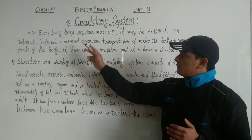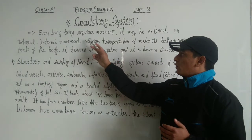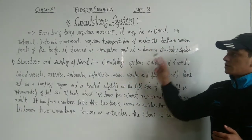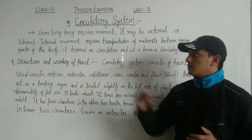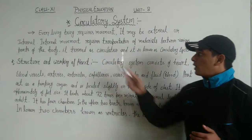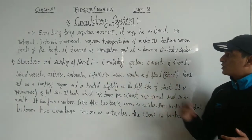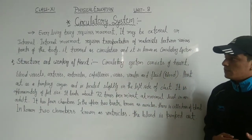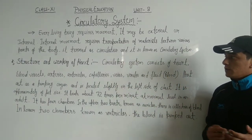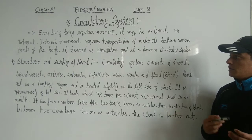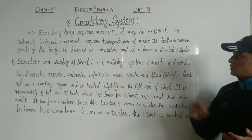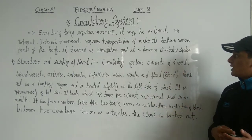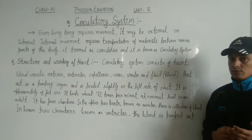Every living being requires movement. It may be external or internal. Internal movement requires transportation of materials between various parts of the body. This is termed as circulation, and the system responsible is known as the circulatory system.